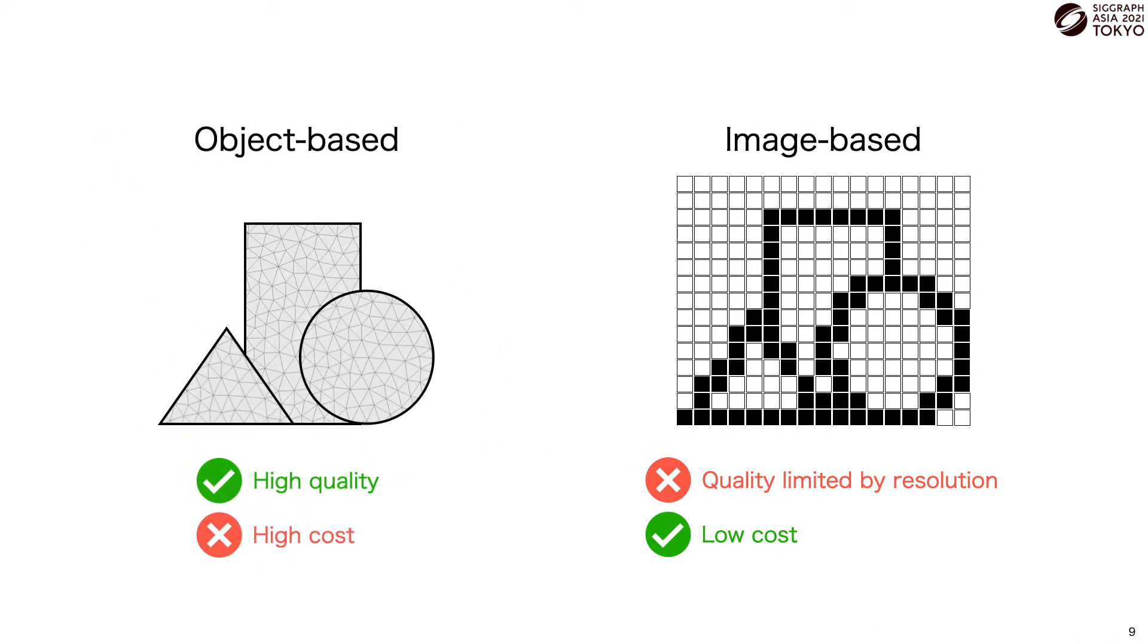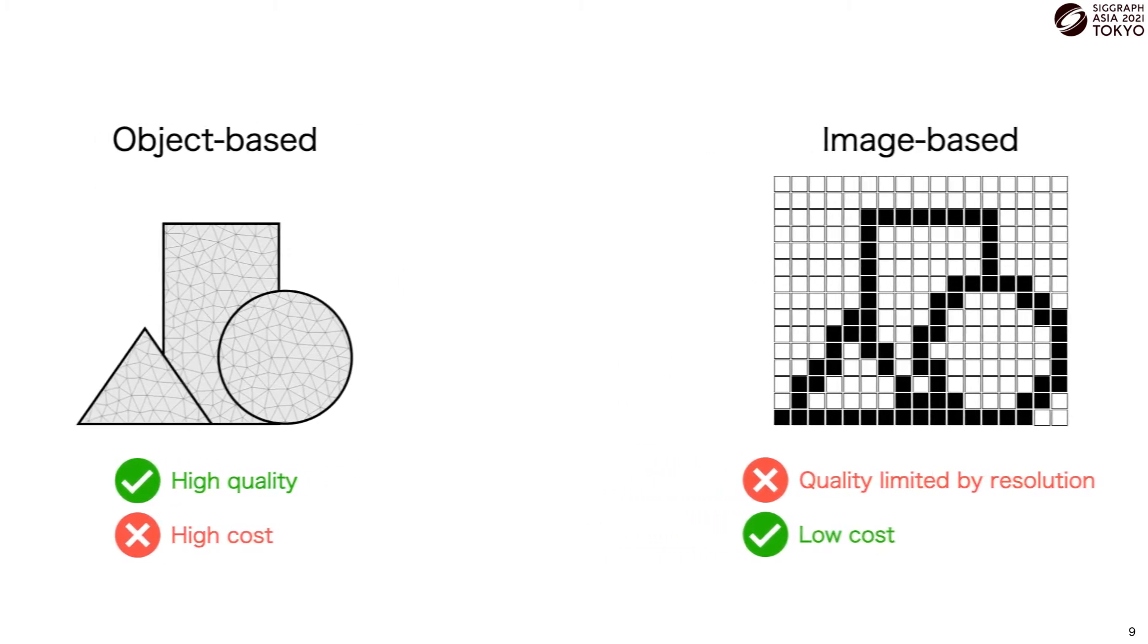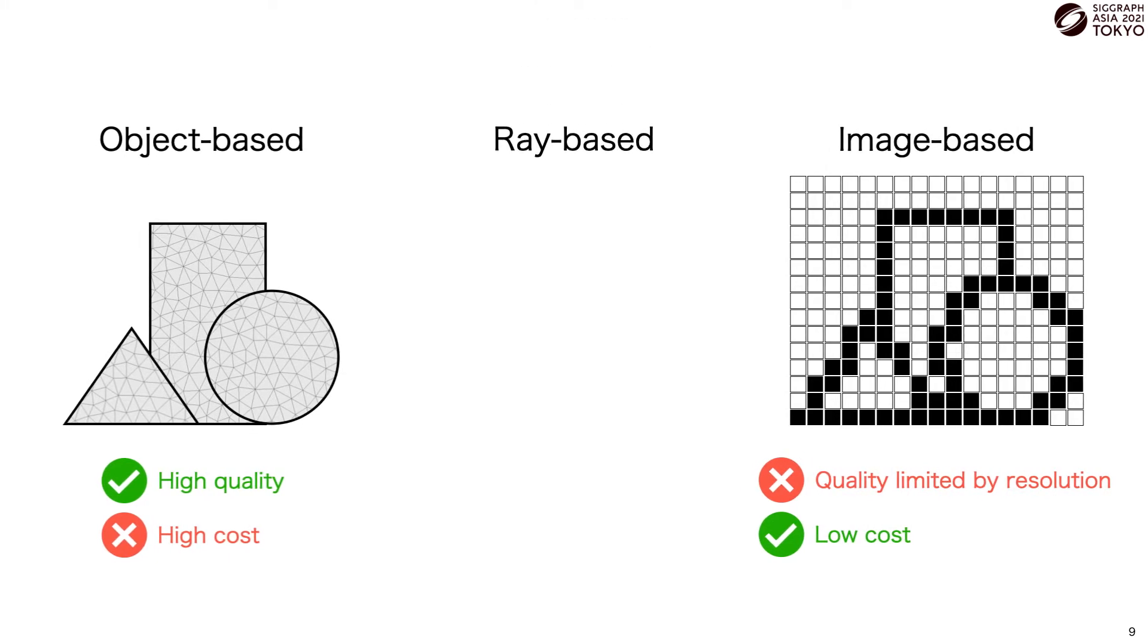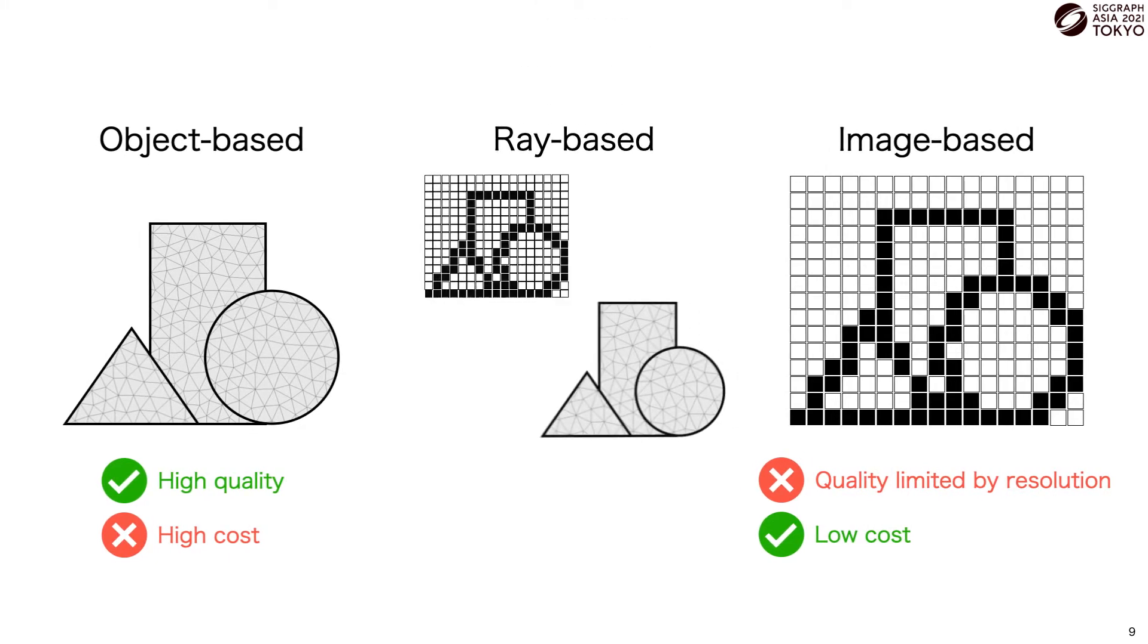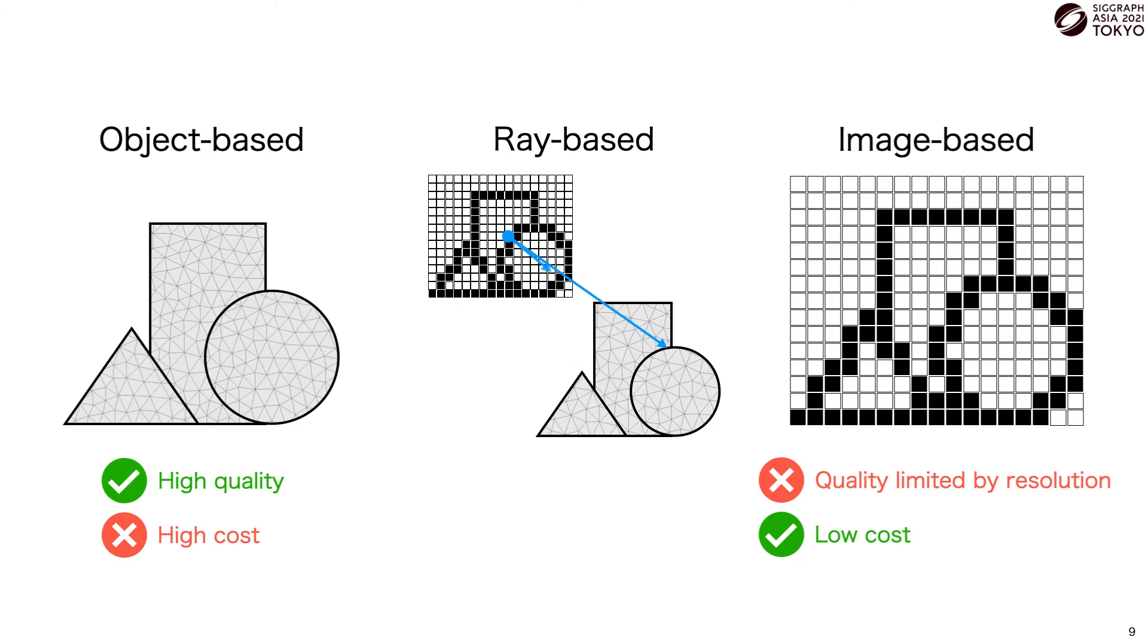However, there are several methods based on raycasting that get the best of both worlds. They operate in image space, so they scale proportional to the pixel resolution, but they use raycasting to efficiently and accurately query information about the geometry, so they can achieve very high-quality lines with relatively low cost. As we build upon existing ray-based methods, let's take a bit deeper dive into how they work.